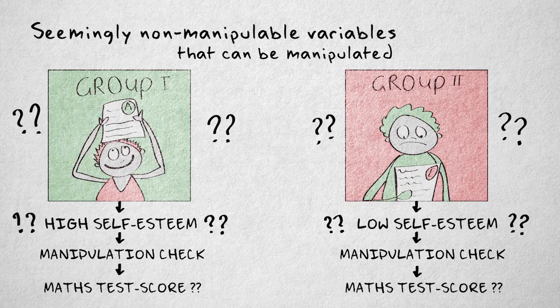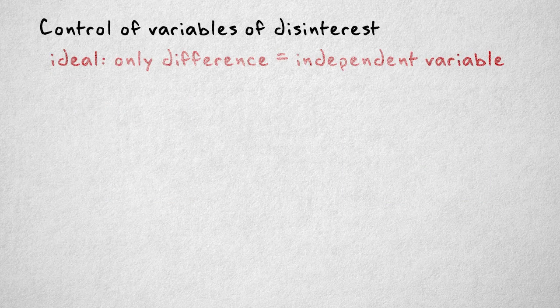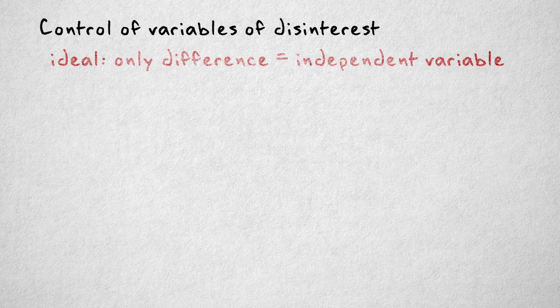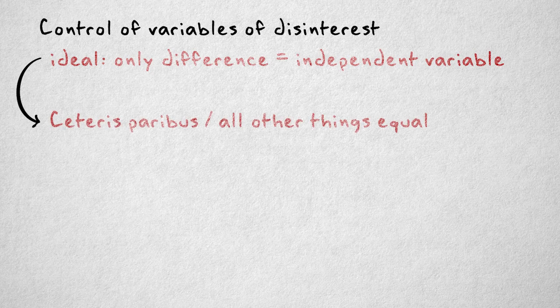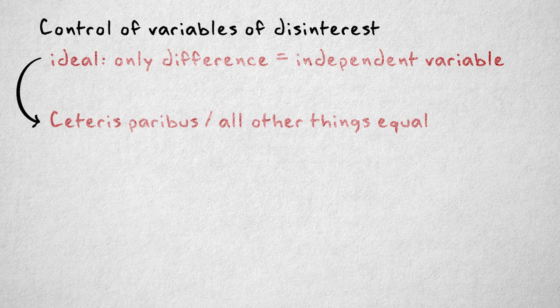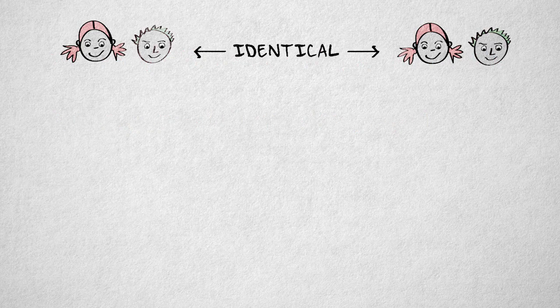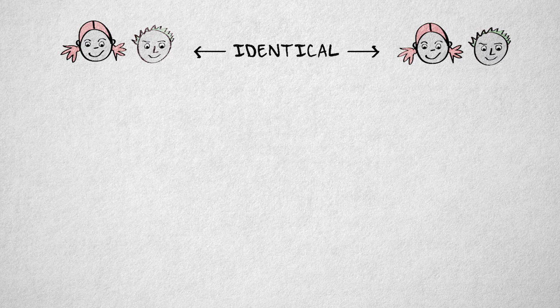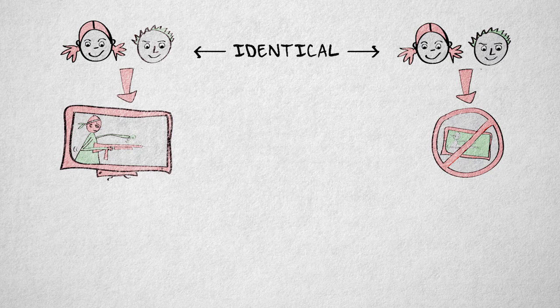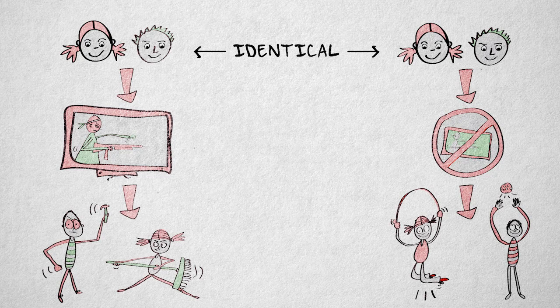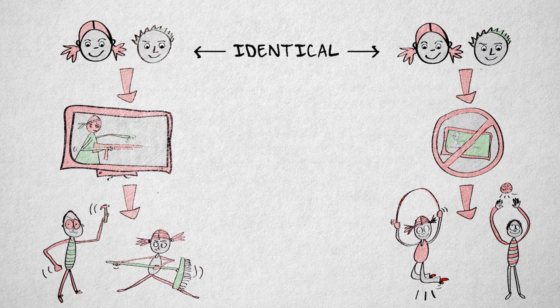Let's move on to control of the variables of disinterest. In the ideal case, each condition is entirely identical to the others, except for the independent variable. This is referred to as the Ceteris Paribus Principle. It means all other things equal. Suppose all other properties are the same, or constant, and only the independent variable differs between conditions. If we find an effect, a difference between the conditions, on the dependent variable, then we can assume this effect is caused by the independent variable.